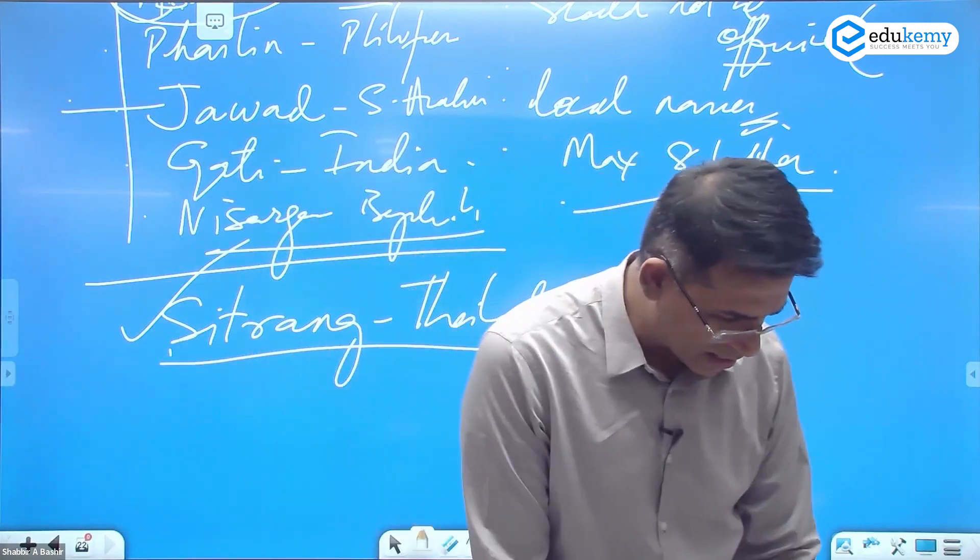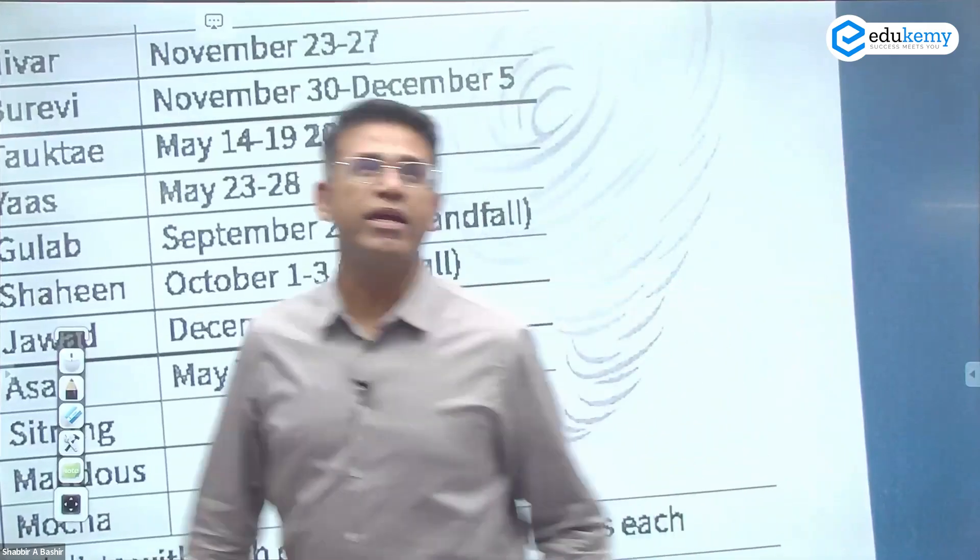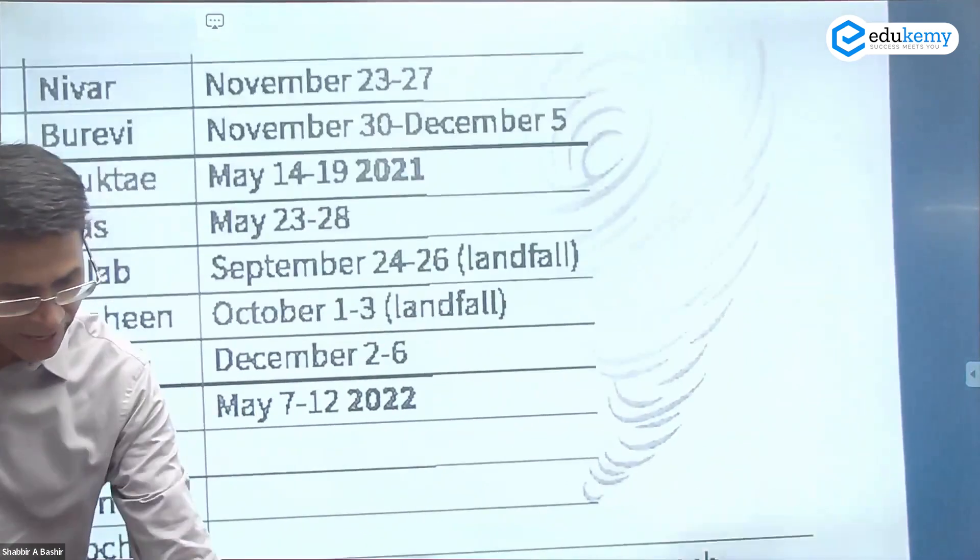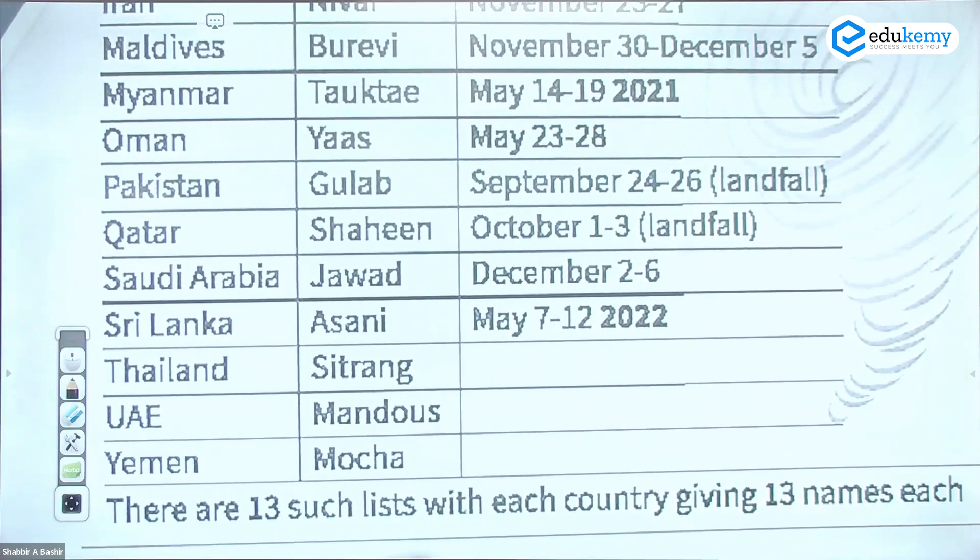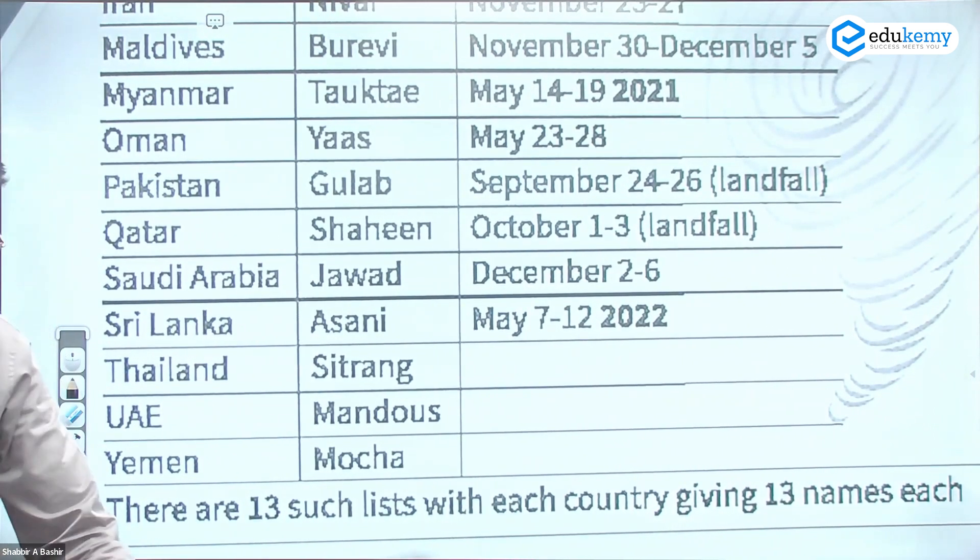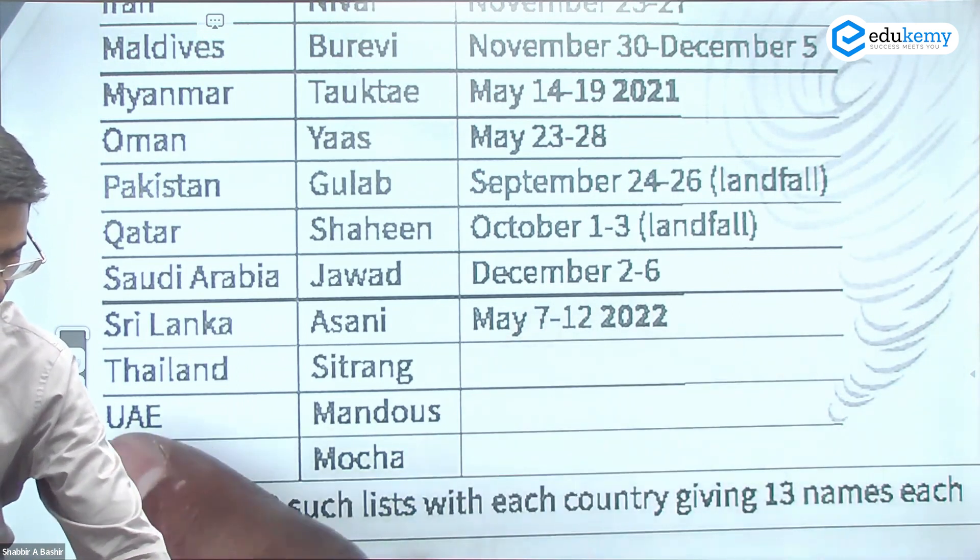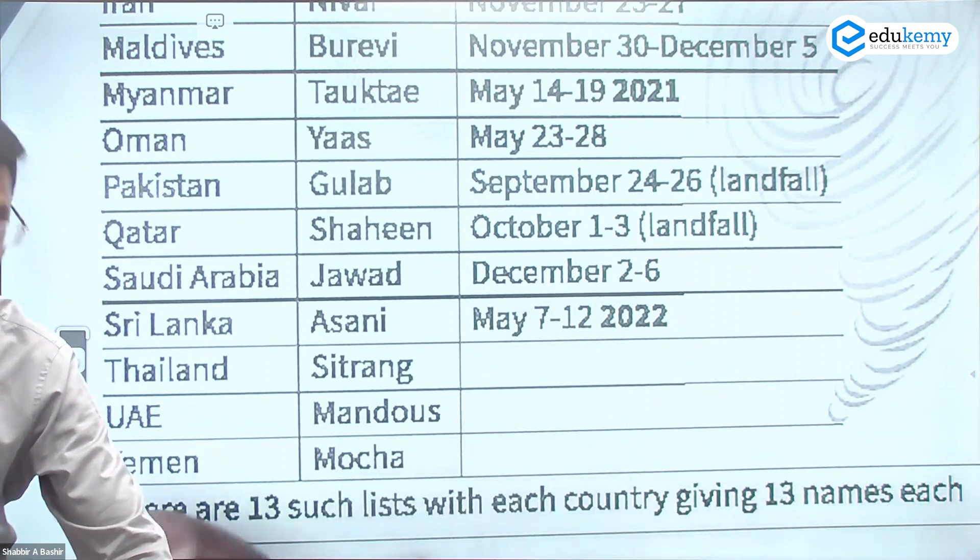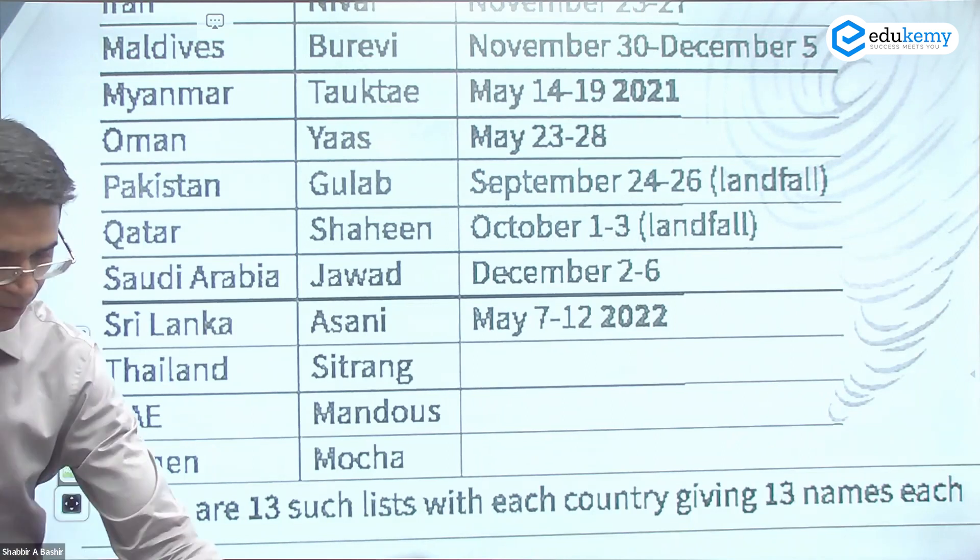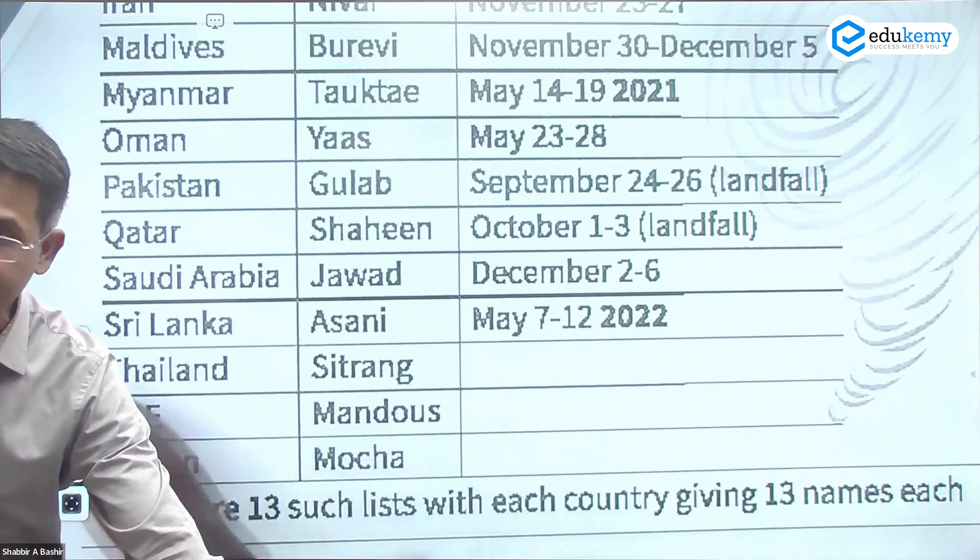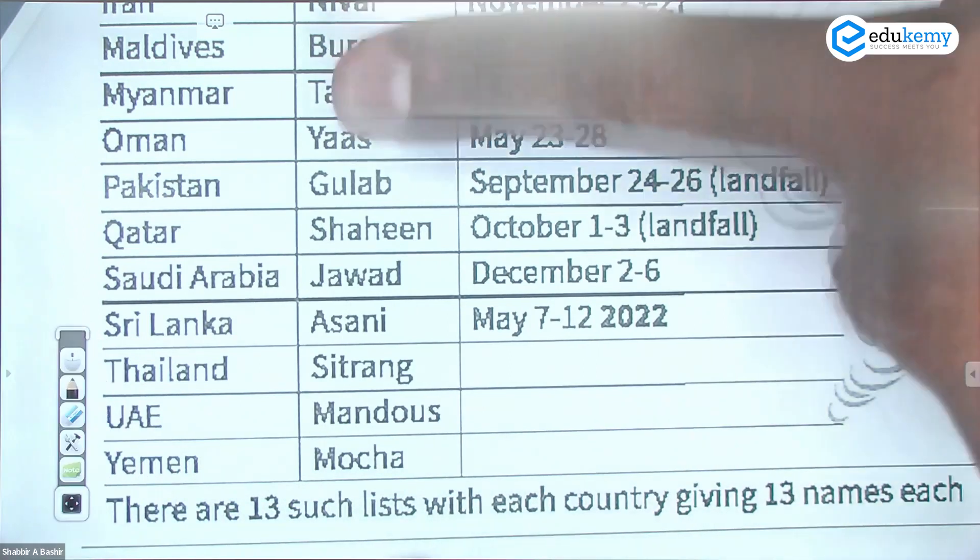There's a full list. All of these names have been used. Asani was the last one. The next one will be Sitrang. UAE will be Mandos, Yemen will be Moka. So in sequence, they'll pick up these names. It's alphabetical. Sri Lanka names, then Thailand will name, then UAE will name, and then Yemen will name. They're following alphabetical order for Indian Ocean.